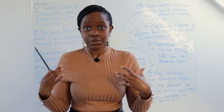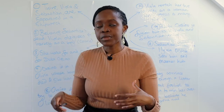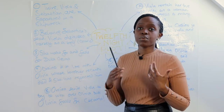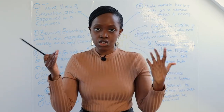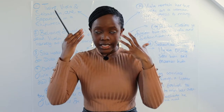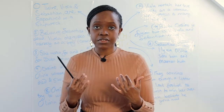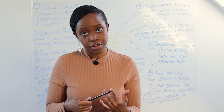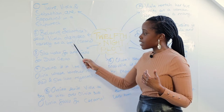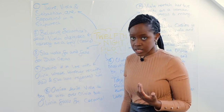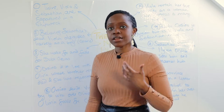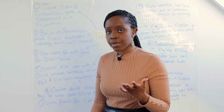Viola, believing Sebastian is dead and that her father has also died, is basically an orphan. As a woman, she realizes it will be very difficult to navigate this new complicated environment, so she decides to disguise herself as a man and rename herself Cesario.